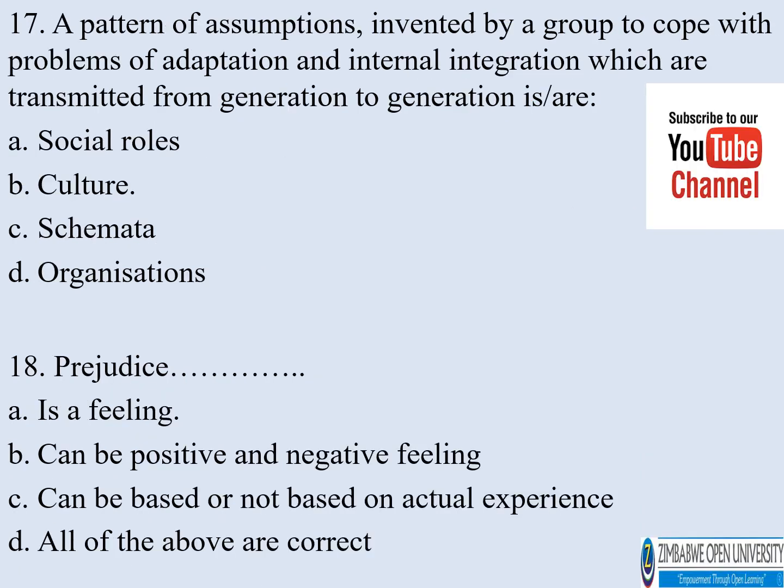Number seventeen. A pattern of assumptions invented by a group to cope with problems of adaptation and internal integration, which are transmitted from generation to generation, is or are: a) social roles, b) culture, c) schemata, d) organizations. The correct answer is culture.